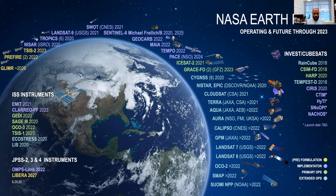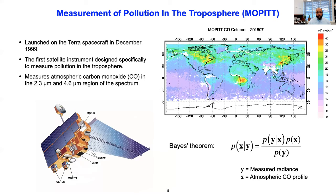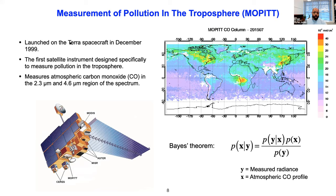So how do we make measurements of these trace gases from space? Clearly we cannot make in situ measurements — we can only rely on the radiation field emanating from the atmosphere. I'm going to use MOPITT as an example. MOPITT — the Measurement of Pollution in the Troposphere — was launched on the Terra spacecraft in December 1999. It was supposed to be a five-year mission, but it will be 22 years in orbit this December. It was designed here at the University of Toronto with Jim Drummond as PI, and was the first instrument designed specifically to measure pollution in the troposphere.